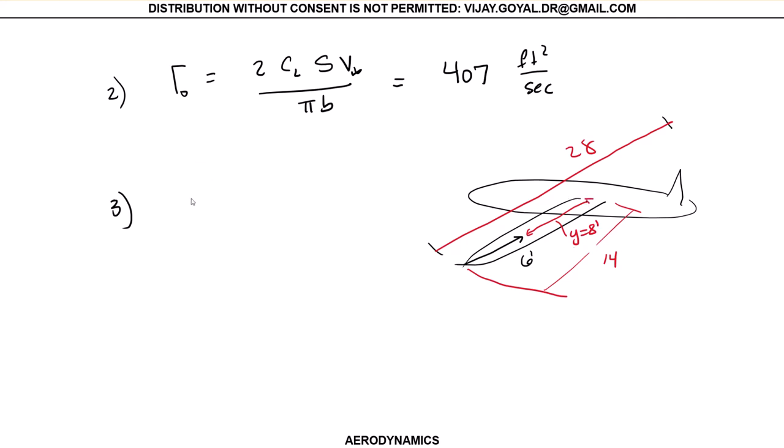So that's the case, then this is equal to gamma sub zero times the square root of one minus (2y/b) squared. This gives you 407 times the square root of one minus 2 times 8 divided by 28 squared. This whole thing gives you a value of 334 feet squared per second.